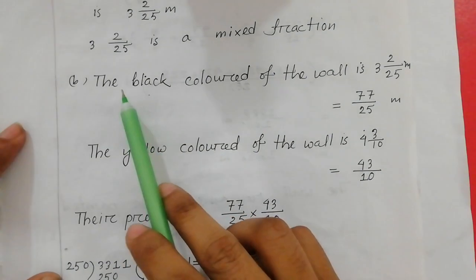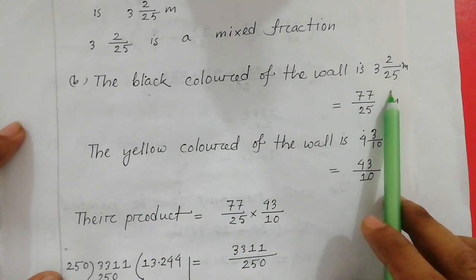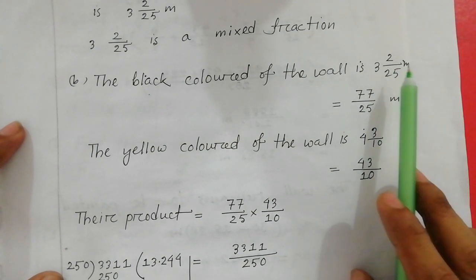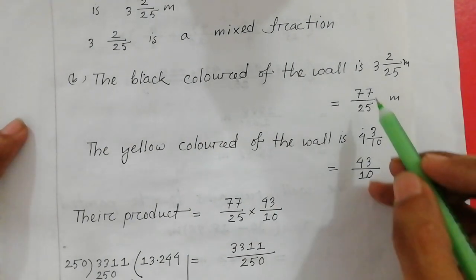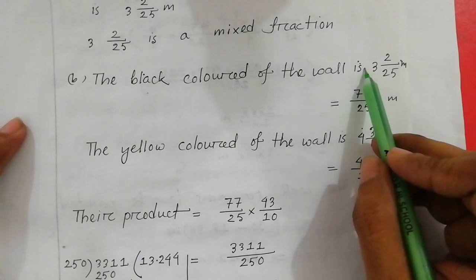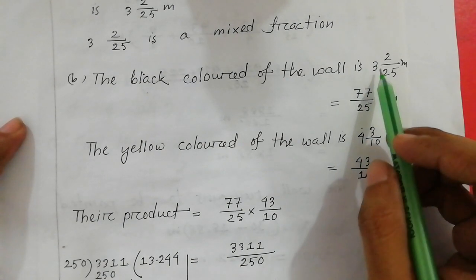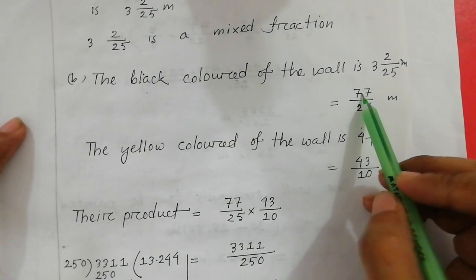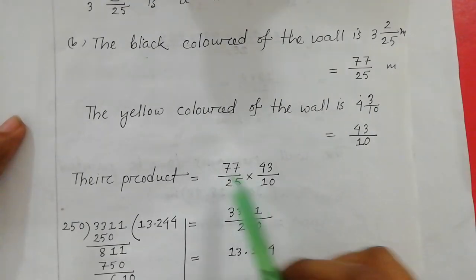The black color of the wall is 3 and 2/25 — this is a mixed fraction. Converting to an improper fraction: multiply 3 by 25 to get 75, then add 2, giving 77 over 25. So the improper fraction is 77/25.